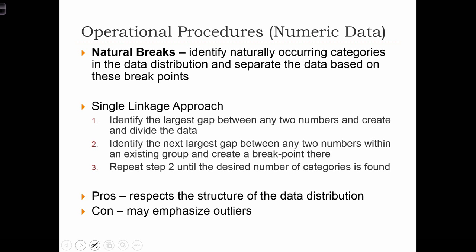The third classification scheme for numeric data that's very commonly used in GIS is called natural breaks. With natural breaks, our algorithm tries to identify naturally occurring categories in the data distribution and separate the data based on these break points.